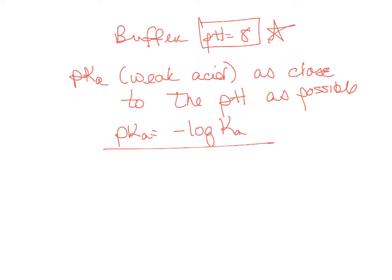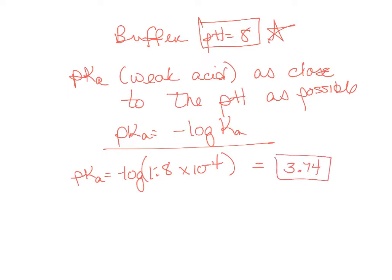For example, formic acid and sodium formate: the Ka of formic acid is 1.8 times 10 to the minus 4. The pKa would be minus log of that value, which gives 3.74 — that is not very close to 8, so that's very unlikely.